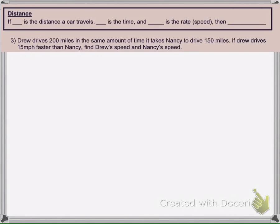Drew drives 200 miles in the same amount of time it takes Nancy to drive 150 miles. If Drew drives 15 miles per hour faster than Nancy, find Drew's speed and Nancy's speed.